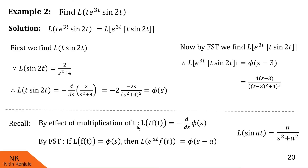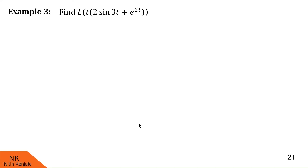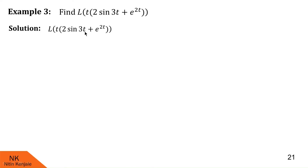Now let us proceed to the next example. Here we are asked to find Laplace of t into 2 sine 3t plus e raised to 2t. We distribute t over the two terms, so we get 2 into Laplace of t sine 3t plus Laplace of t into e raised to 2t. This is due to linearity property of Laplace transform.